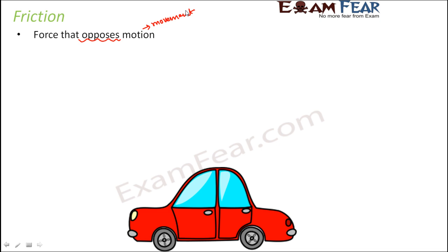Who stopped the car? The car stopped on its own, because there was a force acting in a direction opposite to the direction of motion. The car was moving in this direction. We all know that until and unless a force is applied, the state of motion of an object will not change — an object at rest stays at rest, and a moving object keeps moving forever. But that is not happening here. After travelling a certain distance, the car stops because there is a force acting on it in the opposite direction. This is the direction of motion, and this is the direction of friction.